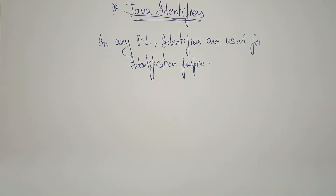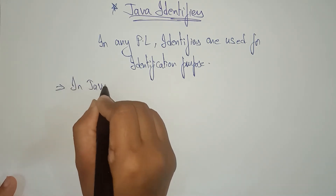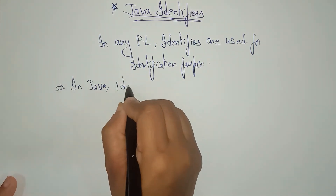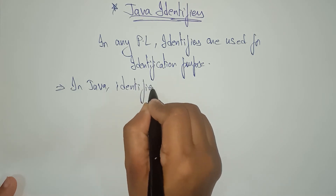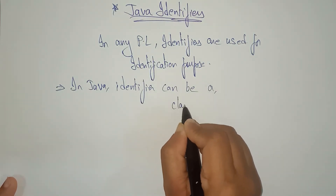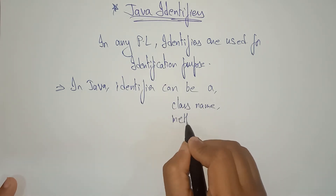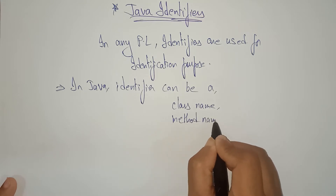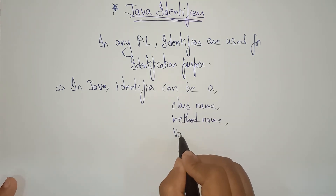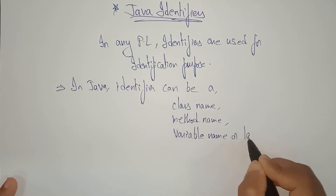In Java, and in any programming language, identifiers are used for identification purpose. In Java specifically, identifiers can be a class name, a method name, a variable name, or a label.